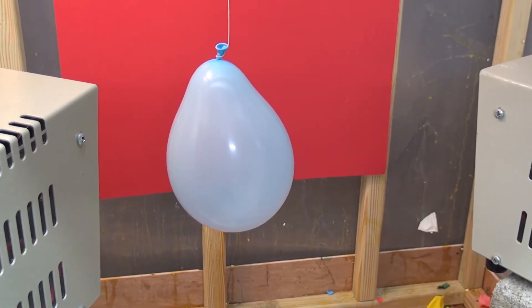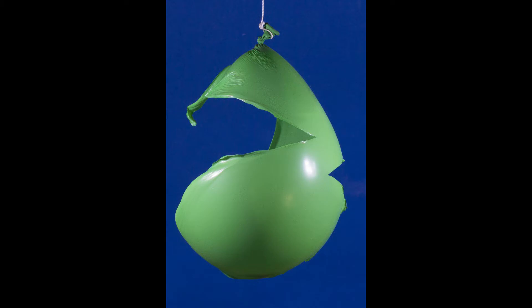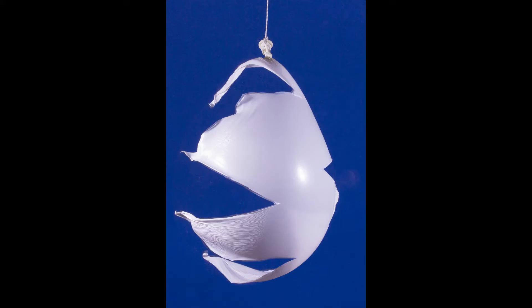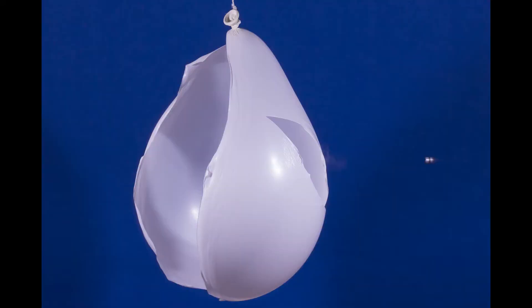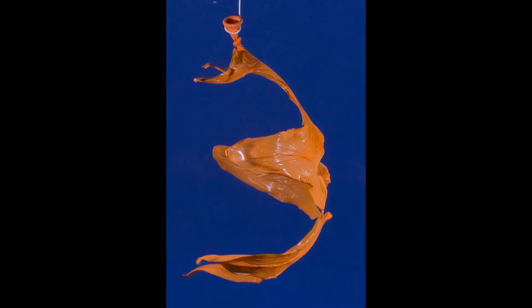So the camera settings for this would be pretty similar if you're using the sound sensor or the projectile sensor. The settings I'm using right now are ISO setting of 800 and aperture of f11 and a shutter speed of two seconds. I just trigger the camera and then I pop the balloon and it captures everything in a dark room with the flashes freezing the scene. Thanks for watching.